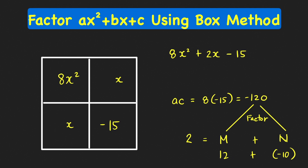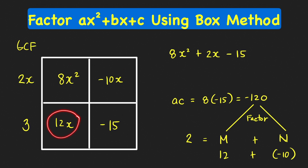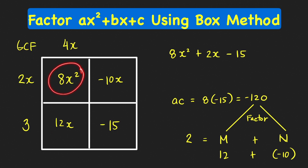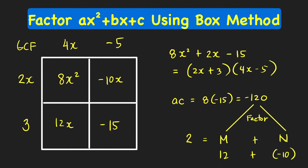We replace m and n: we have 12x and negative 10x. Finding the GCF of each row and column while following the sign of the adjacent term: the first row GCF is 2x, positive, because 8x squared is positive; the second row GCF is positive 3, because that term is positive; the first column GCF is 4x, positive; the second column GCF is negative 5, because that adjacent term is negative. So the factors of our trinomial are 2x plus 3 and 4x minus 5.